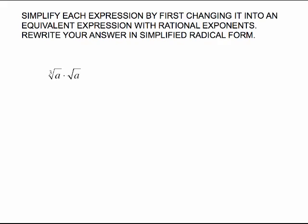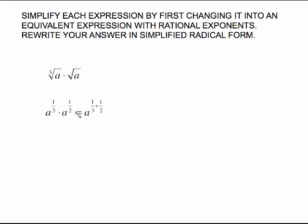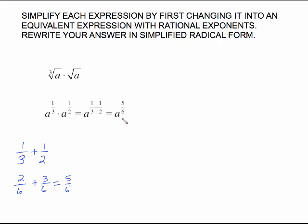Now the directions change. We're going to simplify expressions by first changing them to rational exponent form, then rewriting the answer in simplified radical form. This is the whole reason to use rational exponents: the cube root of a times the square root of a can't be simplified as radicals when the indices are different. But shifting to rational exponent form lets us use exponent laws. The cube root of a is a to the one-third; the square root of a is a to the one-half. Keep the base and add the exponents — one-third plus one-half. Using a common denominator of six gives us five-sixths, so a to the five-sixths.